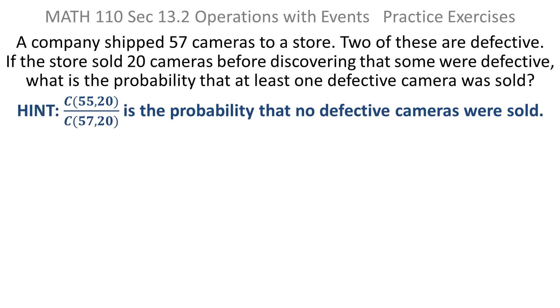And they give us a hint. You should not need this hint, but if they give it to you, you might as well take advantage. It says that the probability that no defective cameras were sold is calculated as the combination of 55 things taken 20 at a time over the combination of 57 things taken 20 at a time.